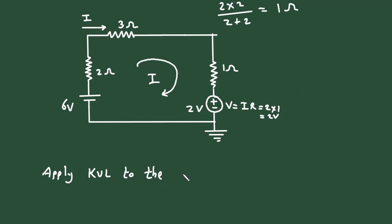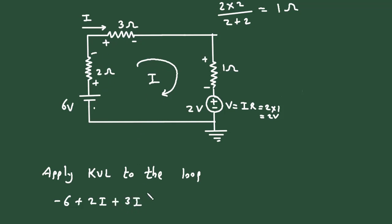Applying KVL to the loop, starting from this point: minus 6, then plus 2, plus 2I, then plus 3I, then plus 1I, then plus 2 is equal to 0.